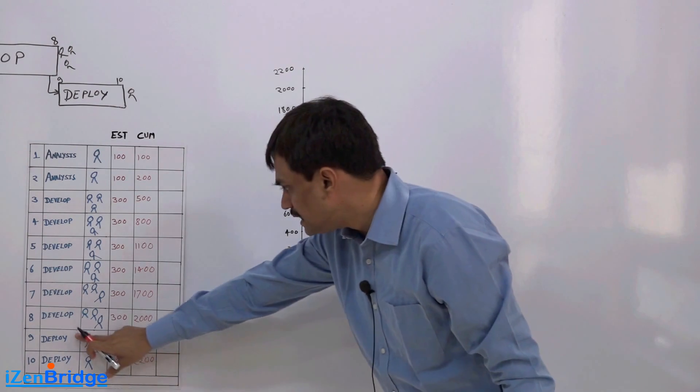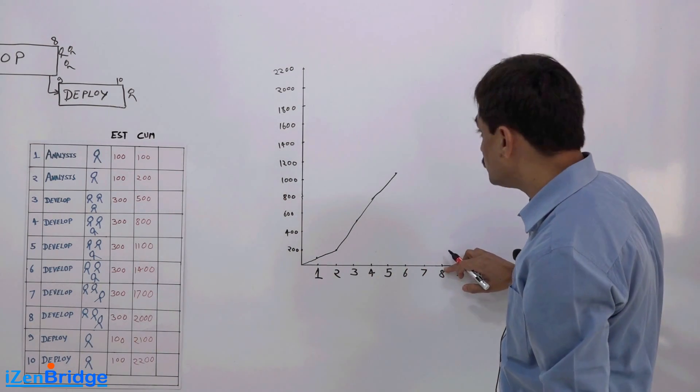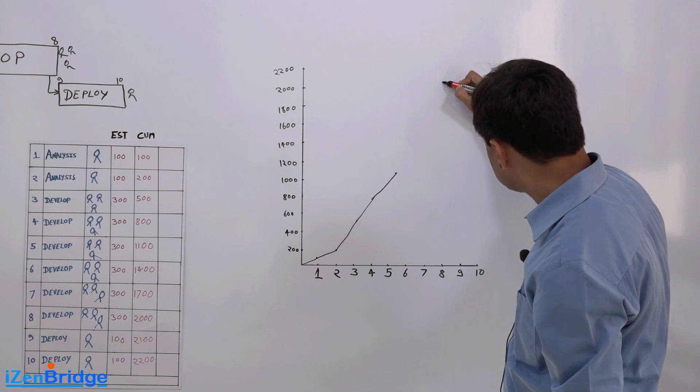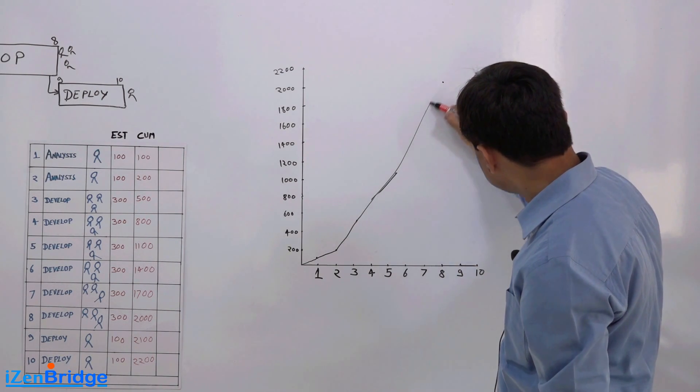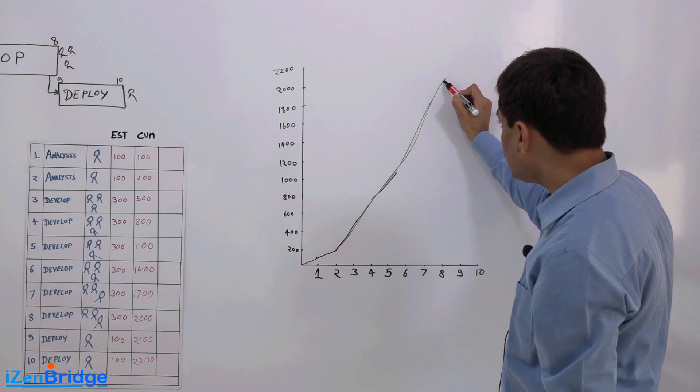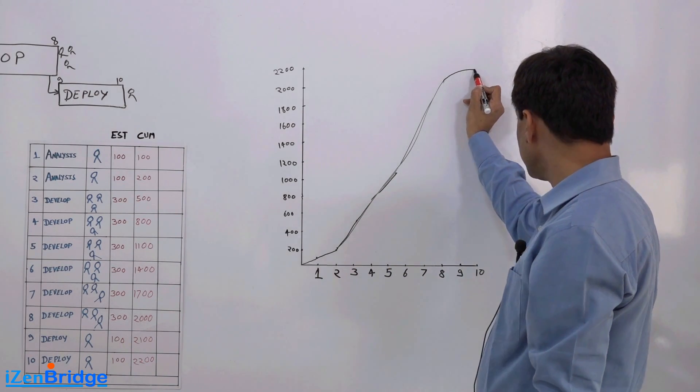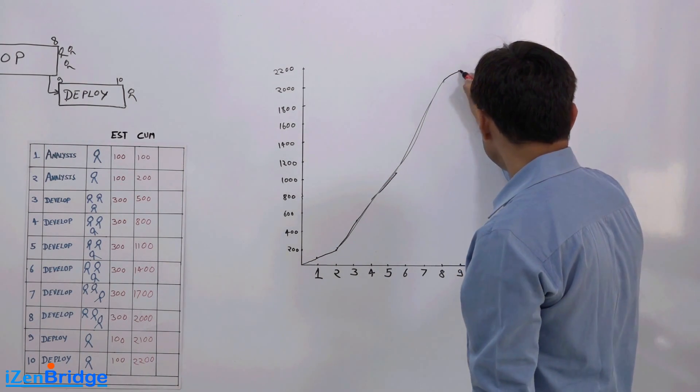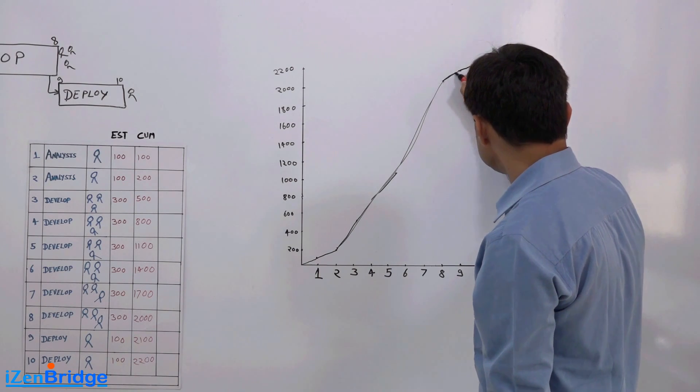By the end of day 8 I'm done with 2000. Then for the remaining it becomes like this because day 9 is 2100 and day 10 is 2200. So the slope is reducing.